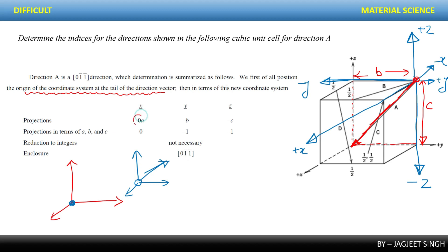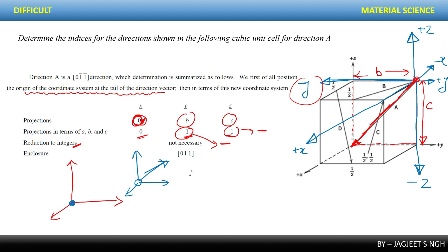So we have: 0 in the x-direction, negative b in the y-direction, and negative c in the z-direction, because it intersects the negative z-axis. When you remove a, b, c the terms become 0, −1, −1. Reduced to integer form they are already integers. If there is a negative sign, put a bar over that number. So you write [0 1̄ 1̄] enclosed in square brackets, which represent the direction.